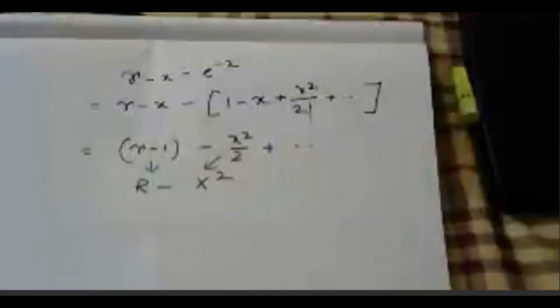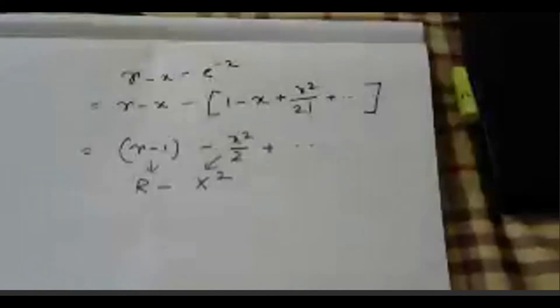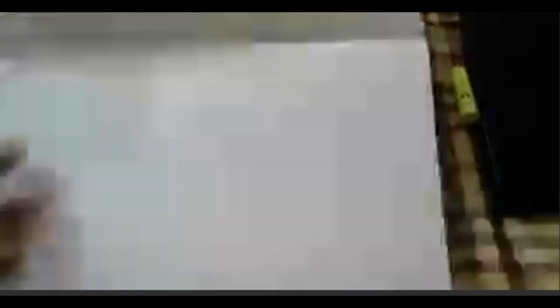Given any one-variable dynamical equation, you should now be able to determine if there is a bifurcation, identify the bifurcation point, reduce it to normal form, and draw the bifurcation diagram plotting x* versus r. From saddle-node, let us move on to the next important bifurcation: transcritical bifurcation.